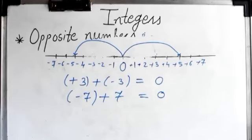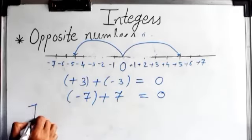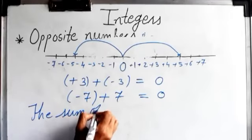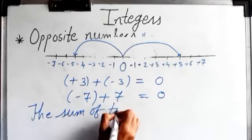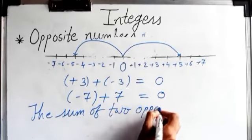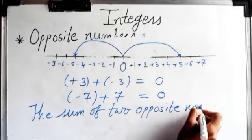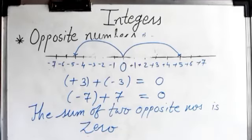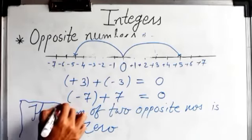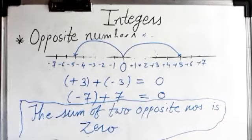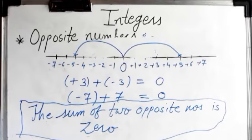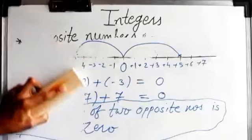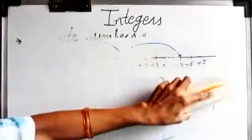So what we conclude is: the sum of two opposite numbers is always zero. You have to remember this — underline it or make a box around it. Opposite numbers always have different signs, and their sum is always zero.